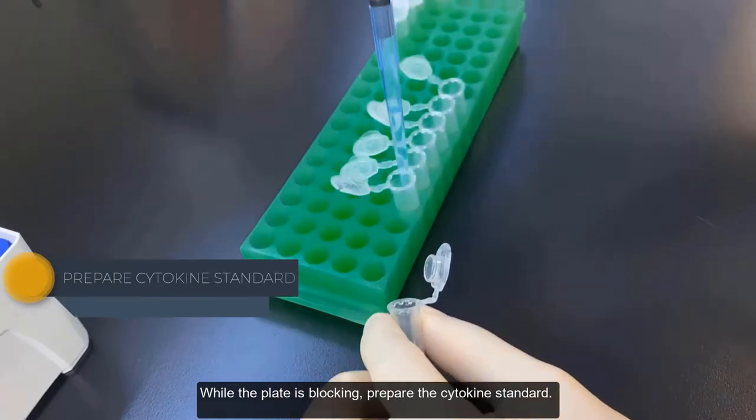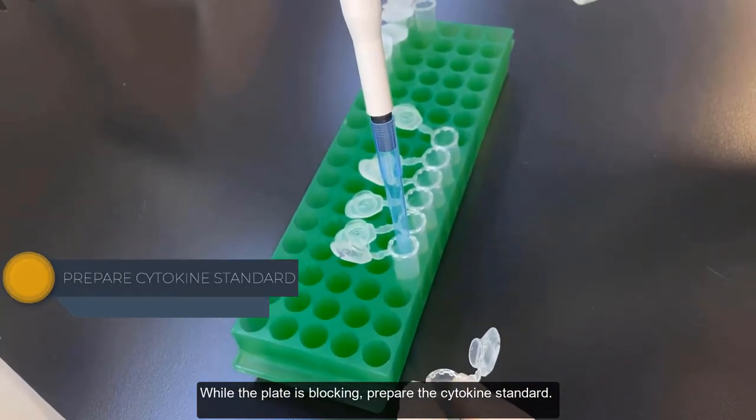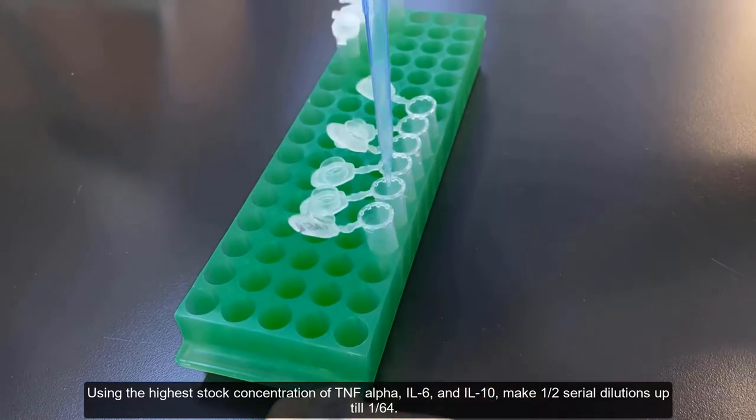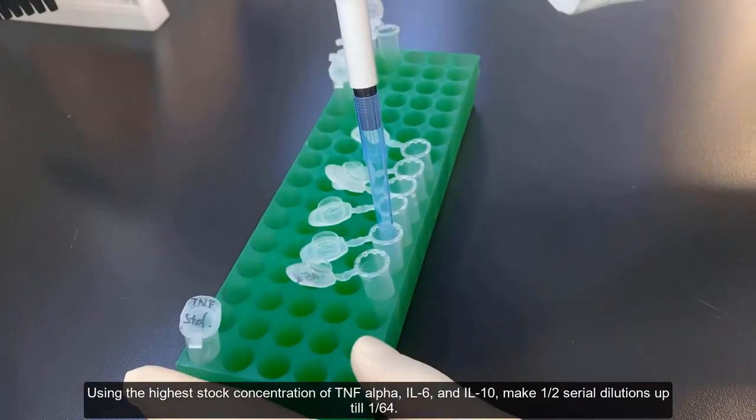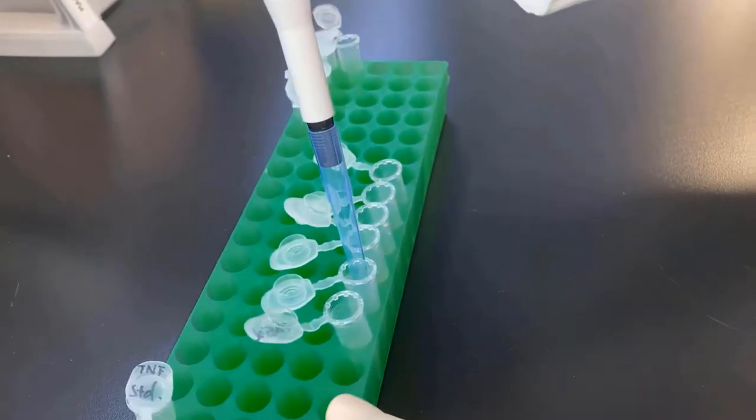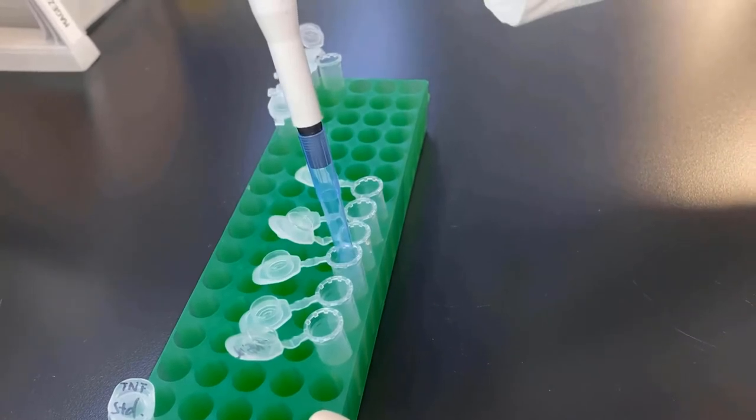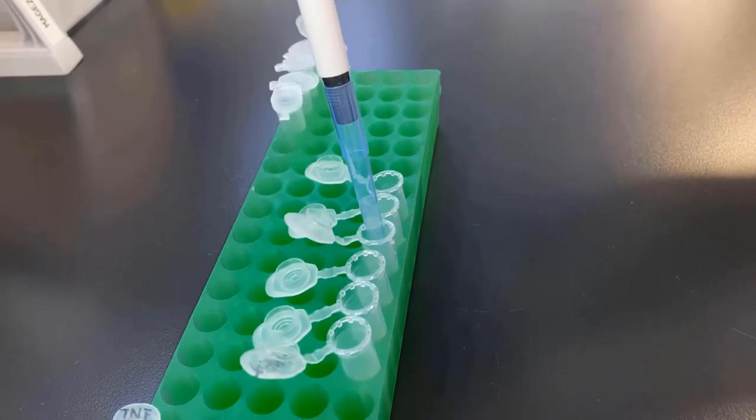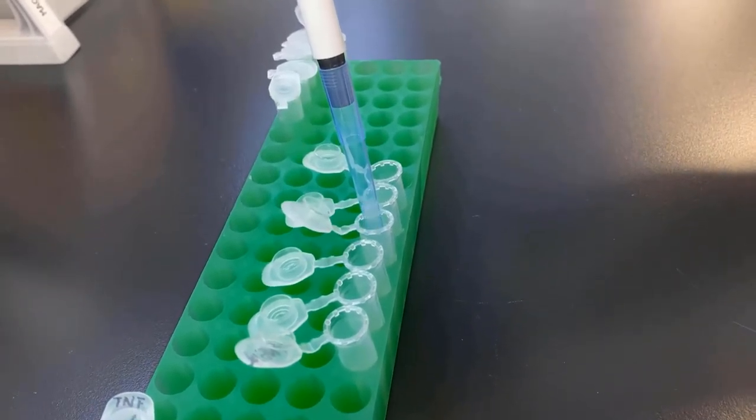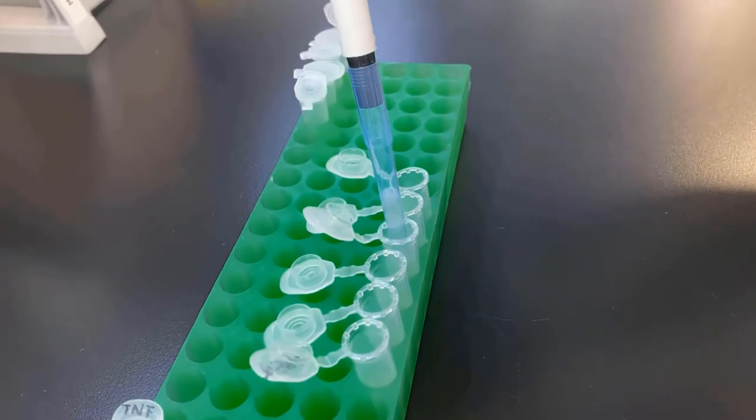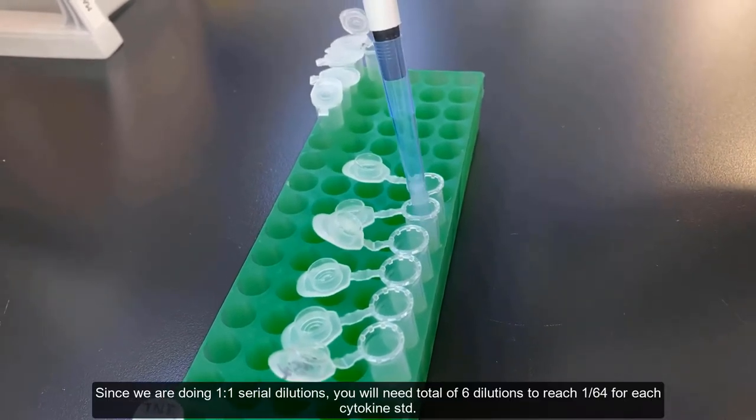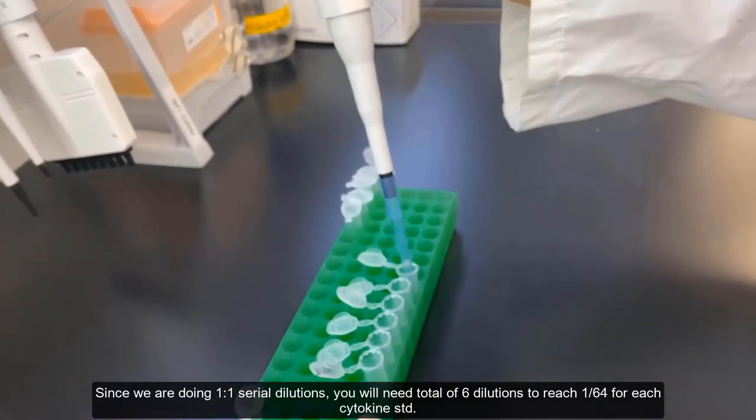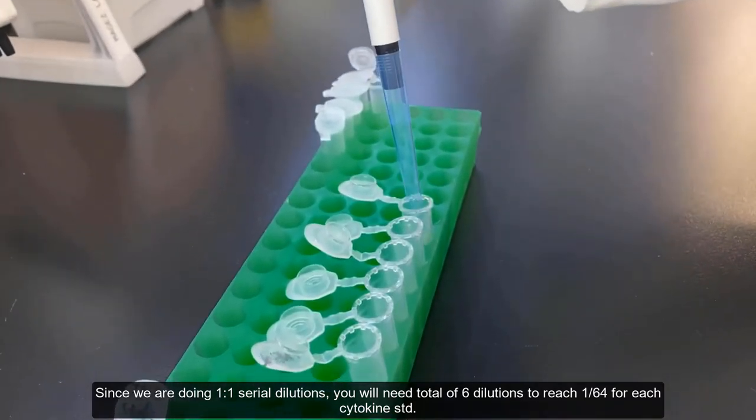While the plate is blocking, prepare the cytokine standard. Using the highest stock concentration of TNF-Alpha, IL-6 and IL-10, make 1 over 2 serial dilutions up to 1 over 64. Since we are doing 1 to 2 serial dilutions, you will need a total of 6 dilutions to reach 1 over 64 for each cytokine standard.